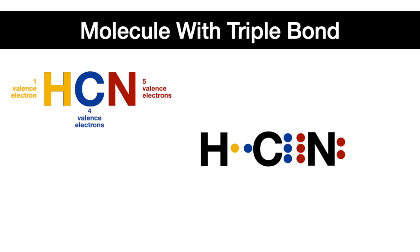Here's the Lewis dot structure — notice there are six electrons between the carbon and nitrogen forming the three bonds of the triple bond. And here's the molecular bond structure without the lone pair on the nitrogen. However, just know it's there.